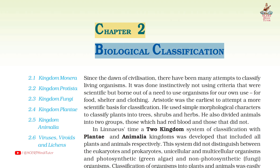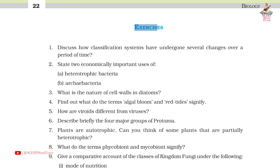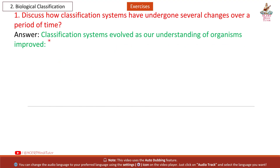Chapter 2: Biological Classification — question answers from Class 11 Biology exercises. Question 1: Discuss how classification systems have undergone several changes over a period of time. Answer: Classification systems evolved as our understanding of organisms improved.